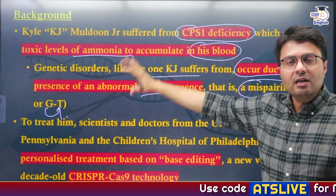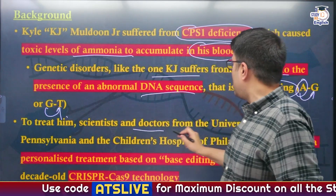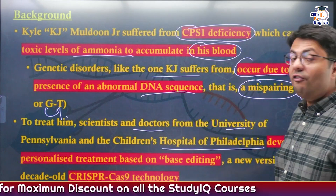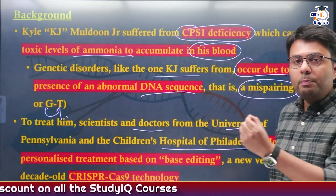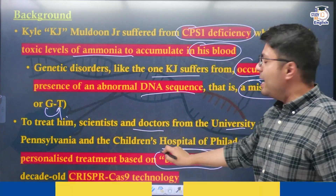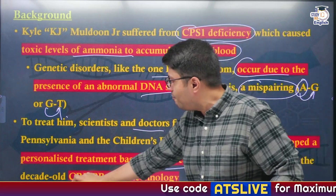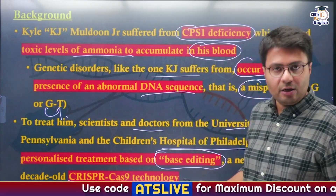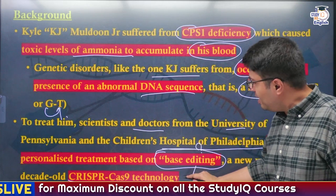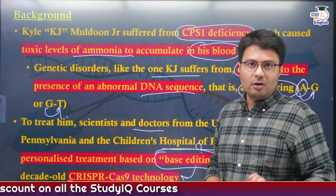To treat KJ, scientists and doctors at the University of Pennsylvania and Children's Hospital in Philadelphia developed a personalized treatment based on the idea of base editing. Base editing is essentially a newer version of the very famous CRISPR-Cas9 technology. To understand how base editing works, we first need to understand how CRISPR-Cas9 technology works.